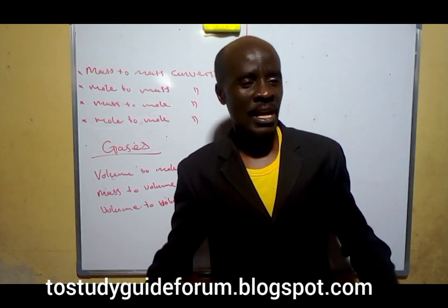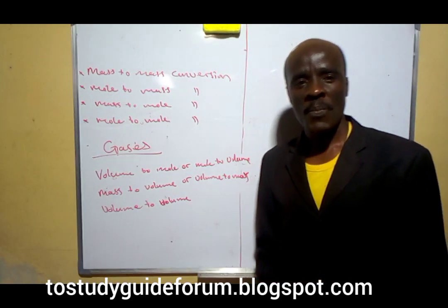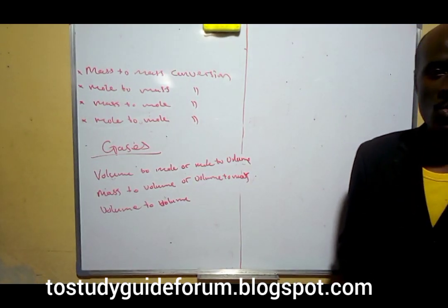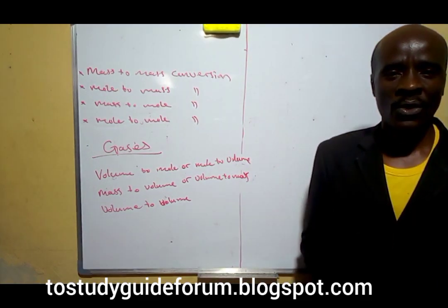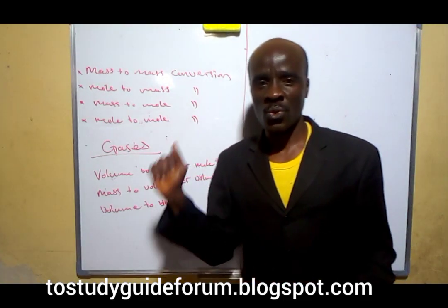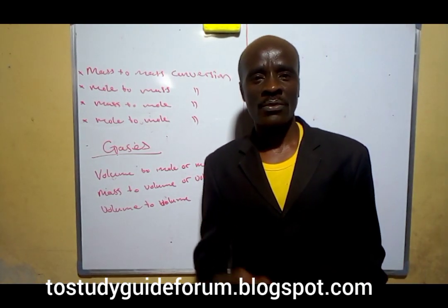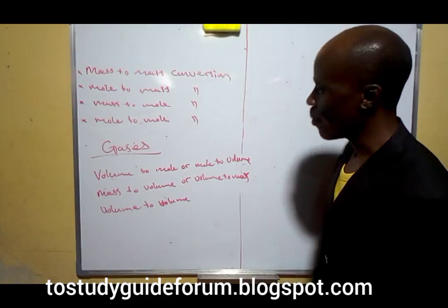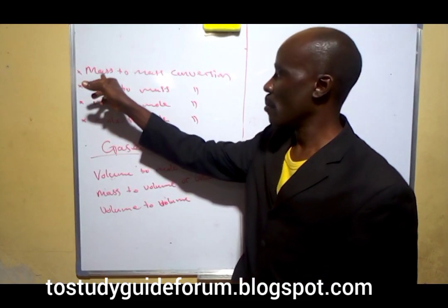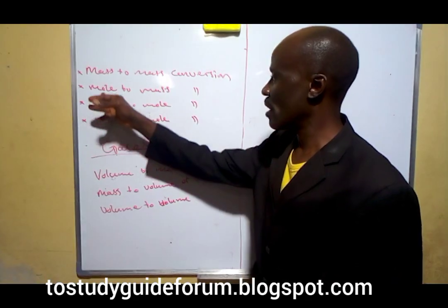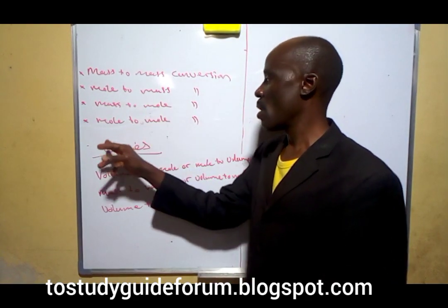In stoichiometric calculations or problems, we can only tackle them based on conversion of one quantity to another — that means using conversion factors. For example, when we talk about masses, we can convert from mass to mass, mole to mass, mass to mole, and mole to mole.